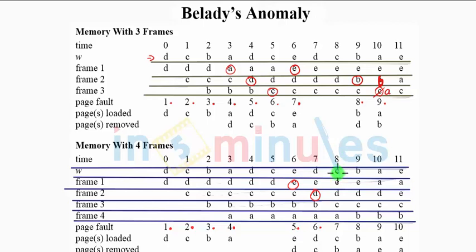Next going in is C. We have E, D, B, A. So longest running B would be replaced by C. There is a fault. Going further with the ninth, working with B. E, B, C, A. So A would be replaced by B getting eighth page fault.